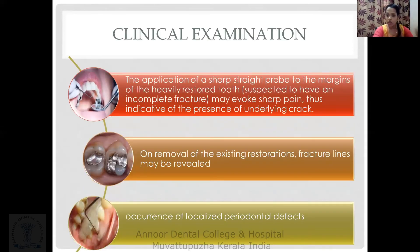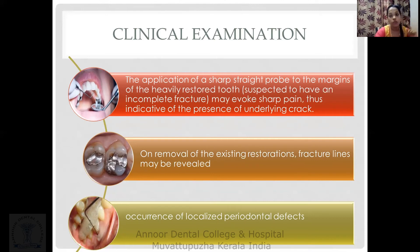To diagnose crack tooth syndrome, clinical examination must be combined with other diagnostic tools. If a large restoration is present, it must be removed entirely to observe for fracture. A periodontal probe should also be used to check for periodontal defects. In cases of vertical root fracture, isolated deep pockets of around 10 mm may be found.